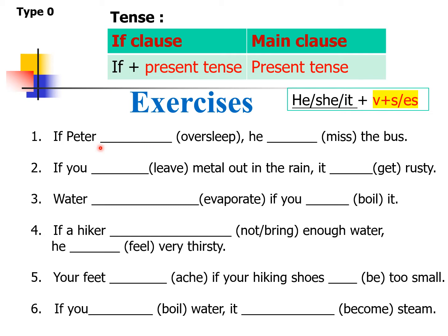Exercise one: 'If Peter oversleep, he missed the bus.' If Peter oversleeps — because Peter means he — we need to add s. So: if he oversleeps. For the main clause, he, she, it: we need to add es to 'miss' because 'miss' ends in s. So the answer is: he misses the bus.